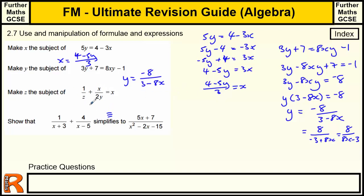Making z the subject. We've got the z on the bottom of a fraction. The usual method for getting rid of something on the bottom of a fraction is to multiply through by that thing. So if I multiply through by z, that gives me 1 plus zx over 2y equals zx. My z and 2 is going to look the same, so I'm going to put a little line through that to show it's a z. And then I multiply through by the 2y.